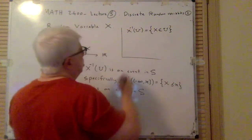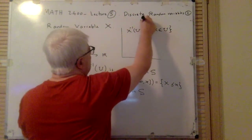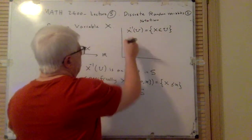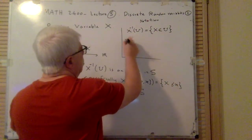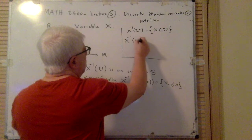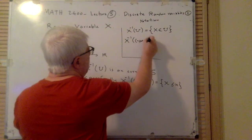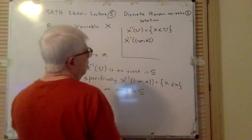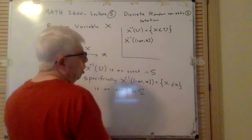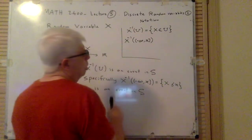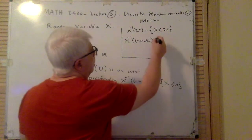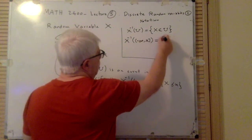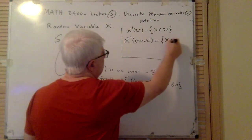This is just a notation. Specifically, this type of subset of R — which is a closed set, closed on one side — is denoted by X less than or equal to x.